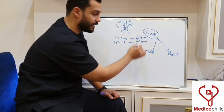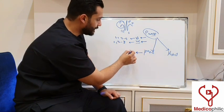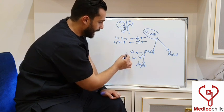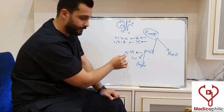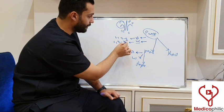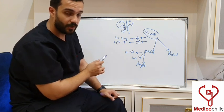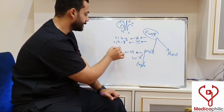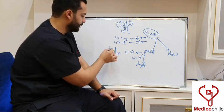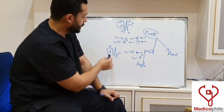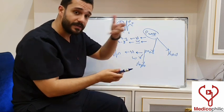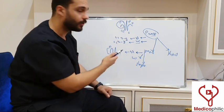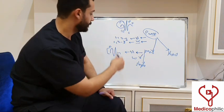When a P wave is present in the ECG, we look at its height, width, and shape. If the height of the P wave is above five small squares, it is called a peaked P wave. A peaked or high P wave indicates pulmonary hypertension and is called P pulmonale.